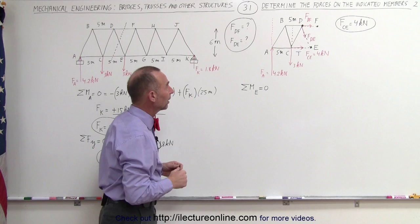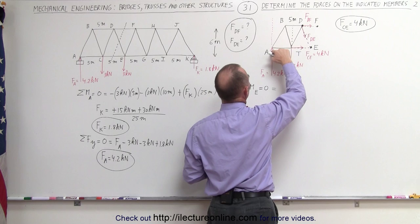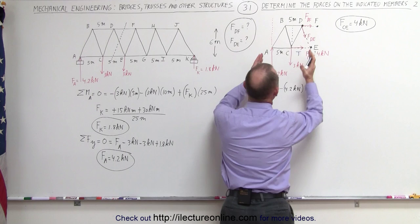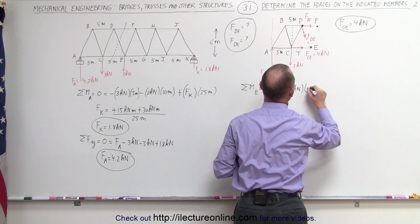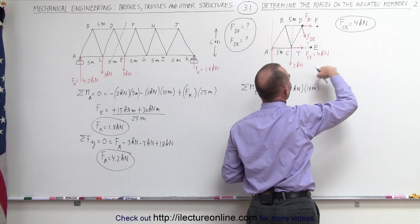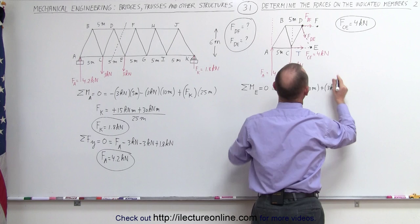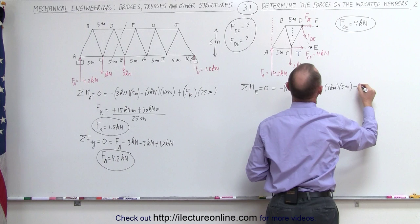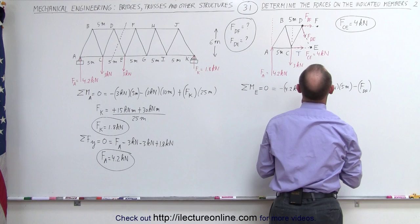FDF. Starting with this force right here, it gives us a clockwise — that is, negative — moment: negative 4.2 kilonewtons multiplied times the perpendicular distance from the line of action to the pivot point, which is 10 meters. This force gives us a counterclockwise moment: plus 3 kilonewtons times the perpendicular distance of 5 meters. And finally, this force gives us a clockwise moment: minus FDF times the perpendicular distance of 6 meters.